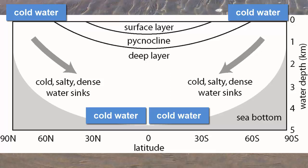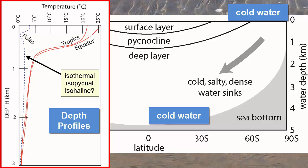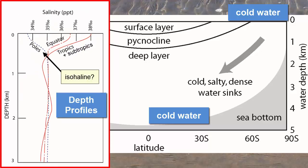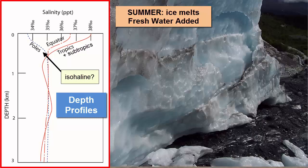The depth profiles of these polar waters are therefore called isothermal and isopycnal. If they also have the same salinity, we'd call them isohaline. Whether they do depends on the seasons. In polar winters, ice formation increases, leaving the surface water more saline. In polar summers, ice melting increases, leaving the surface waters fresher. So salinity might change slightly with depth at the poles.